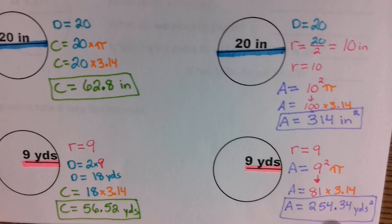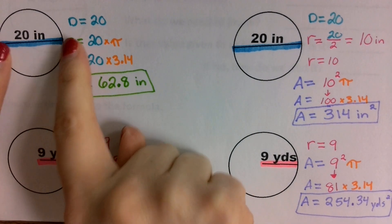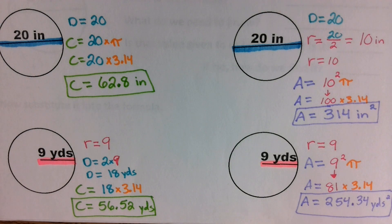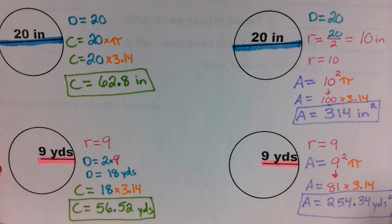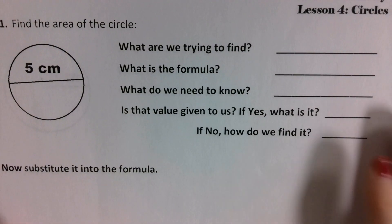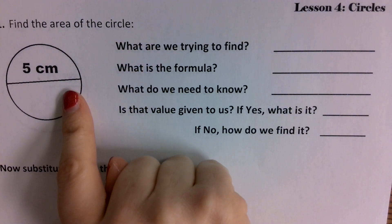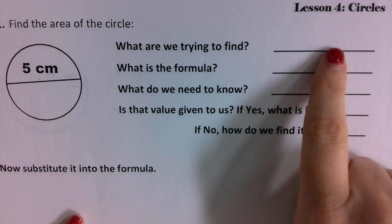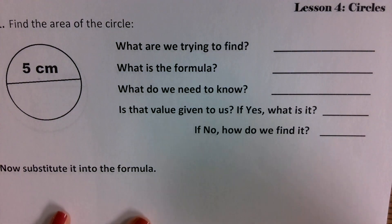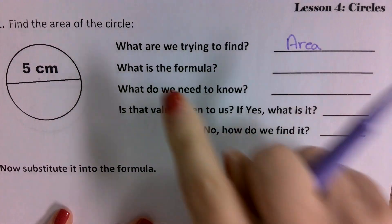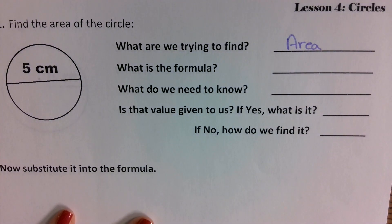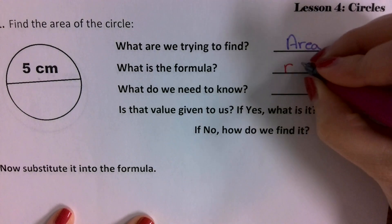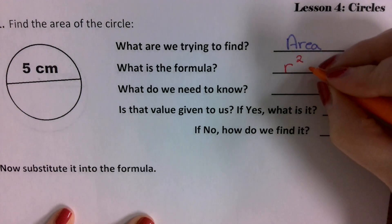These are examples of how to solve for circumference when given diameter, how to solve when given the radius, how to solve for area when given diameter, and how to solve for area when given radius. On the next couple of problems, you're going to be filling in a table of information. For the very first problem, we want to find the area of the circle. So what are we trying to find? Area. I want to write that down — I'm trying to find area. What is the formula we need to use? Radius squared times pi.